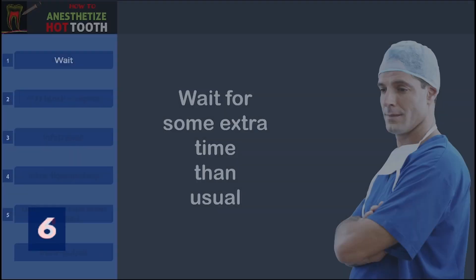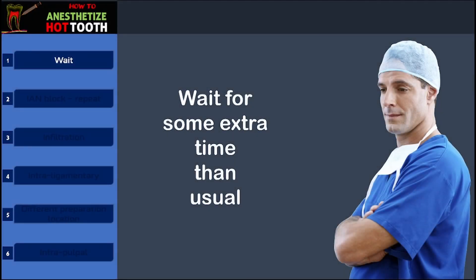The first and foremost strategy is to understand that sometimes the local anesthetic solution can take a bit more time to anesthetize the tooth. So it is always good practice to wait for three to five minutes extra compared to the usual anesthesia. As the tooth pulp is inflamed, the chances for the tooth to get anesthetized are better with extra waiting time. In many cases this technique is fairly adequate and the anesthesia will work.